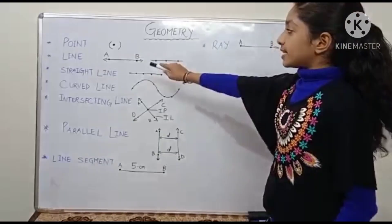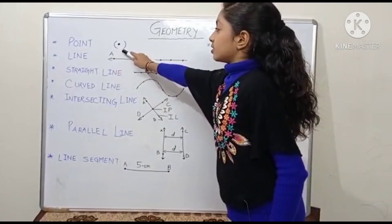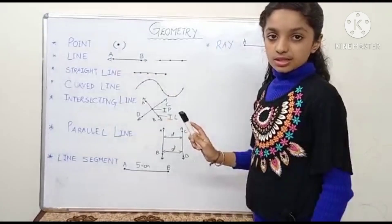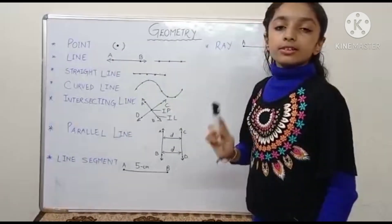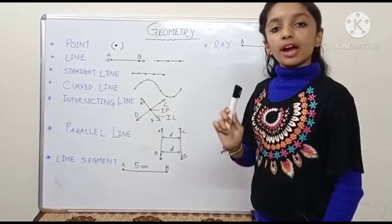First of all, we will discuss point. So point is represented by a dot. It shows an exact location and it doesn't have length, breadth or height.